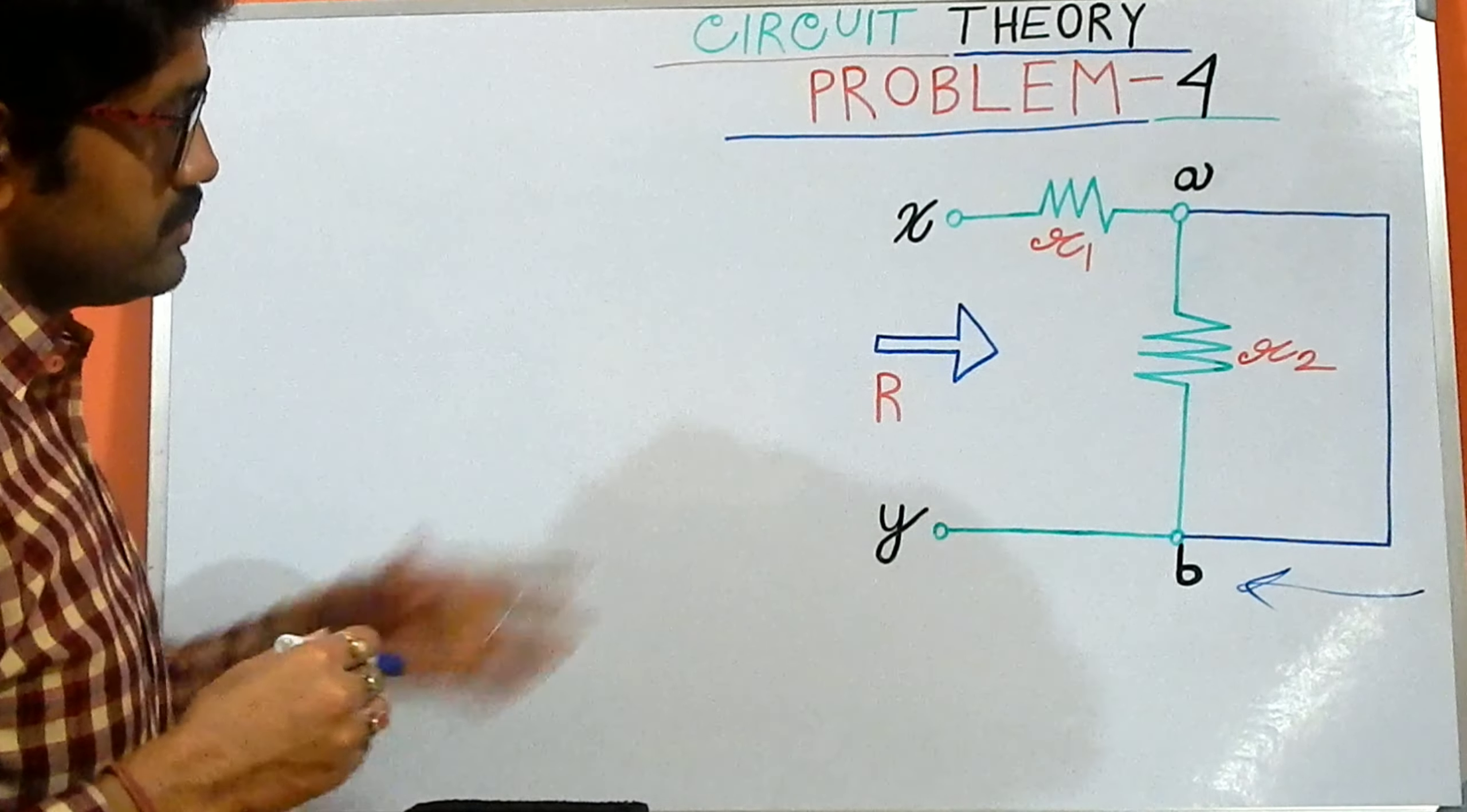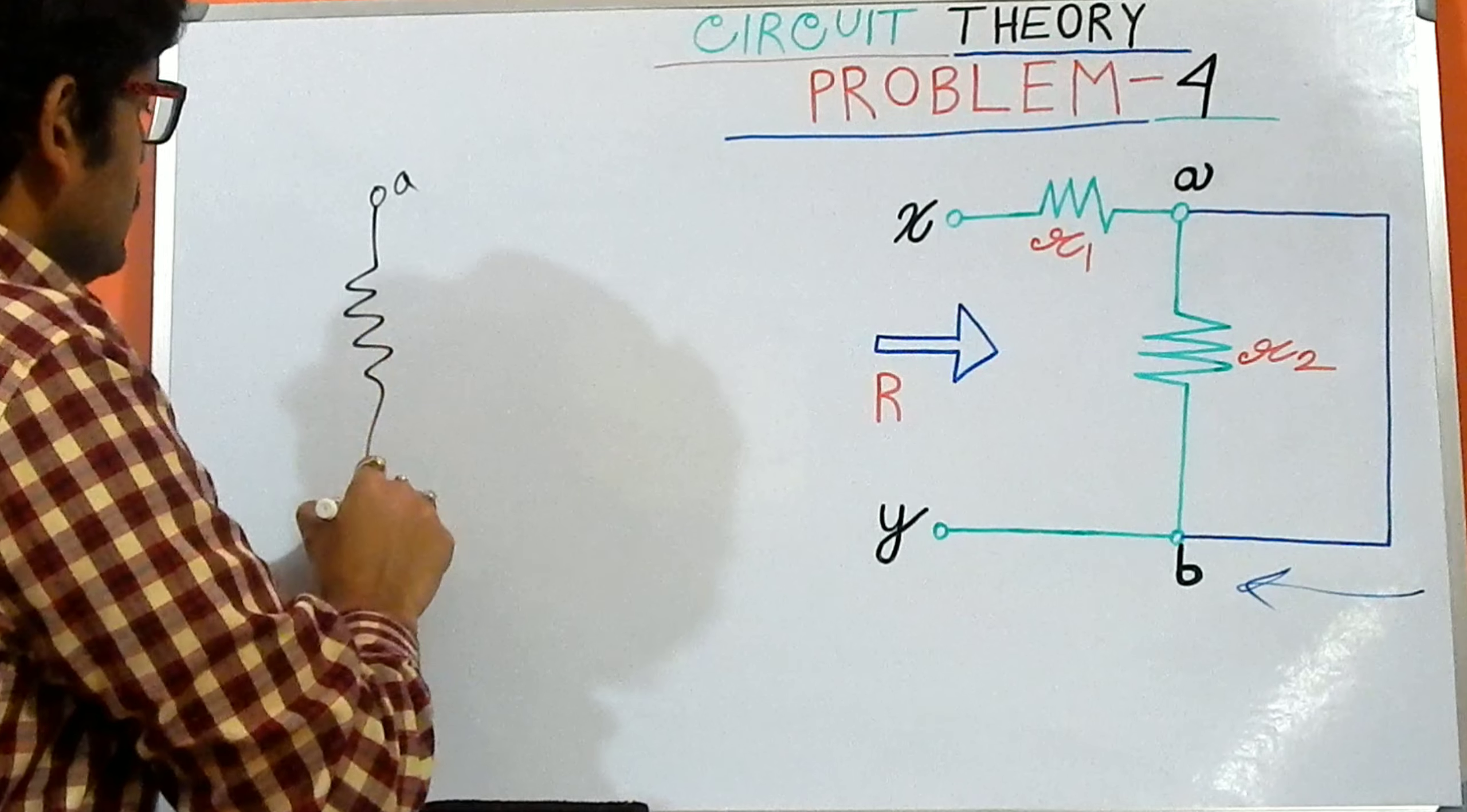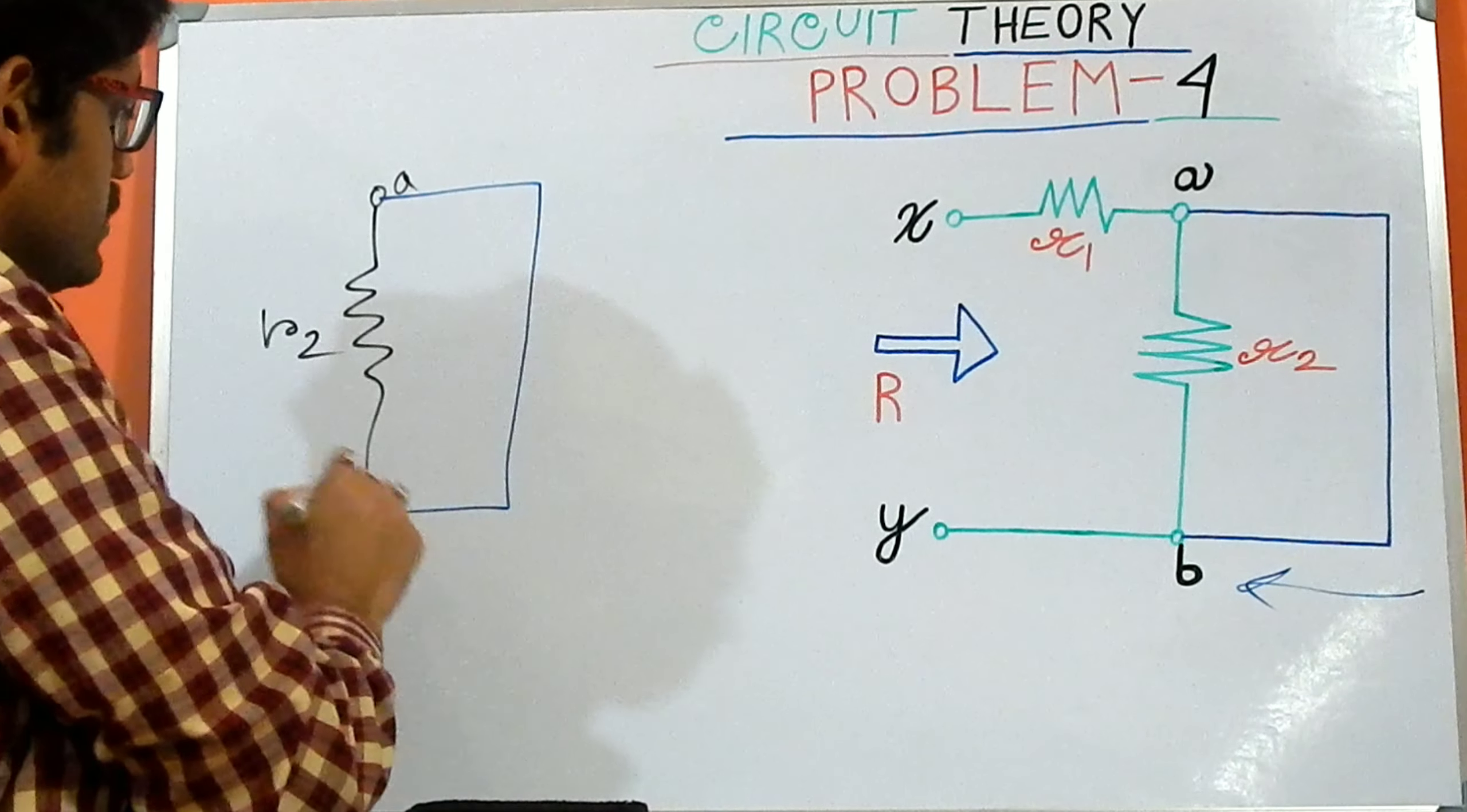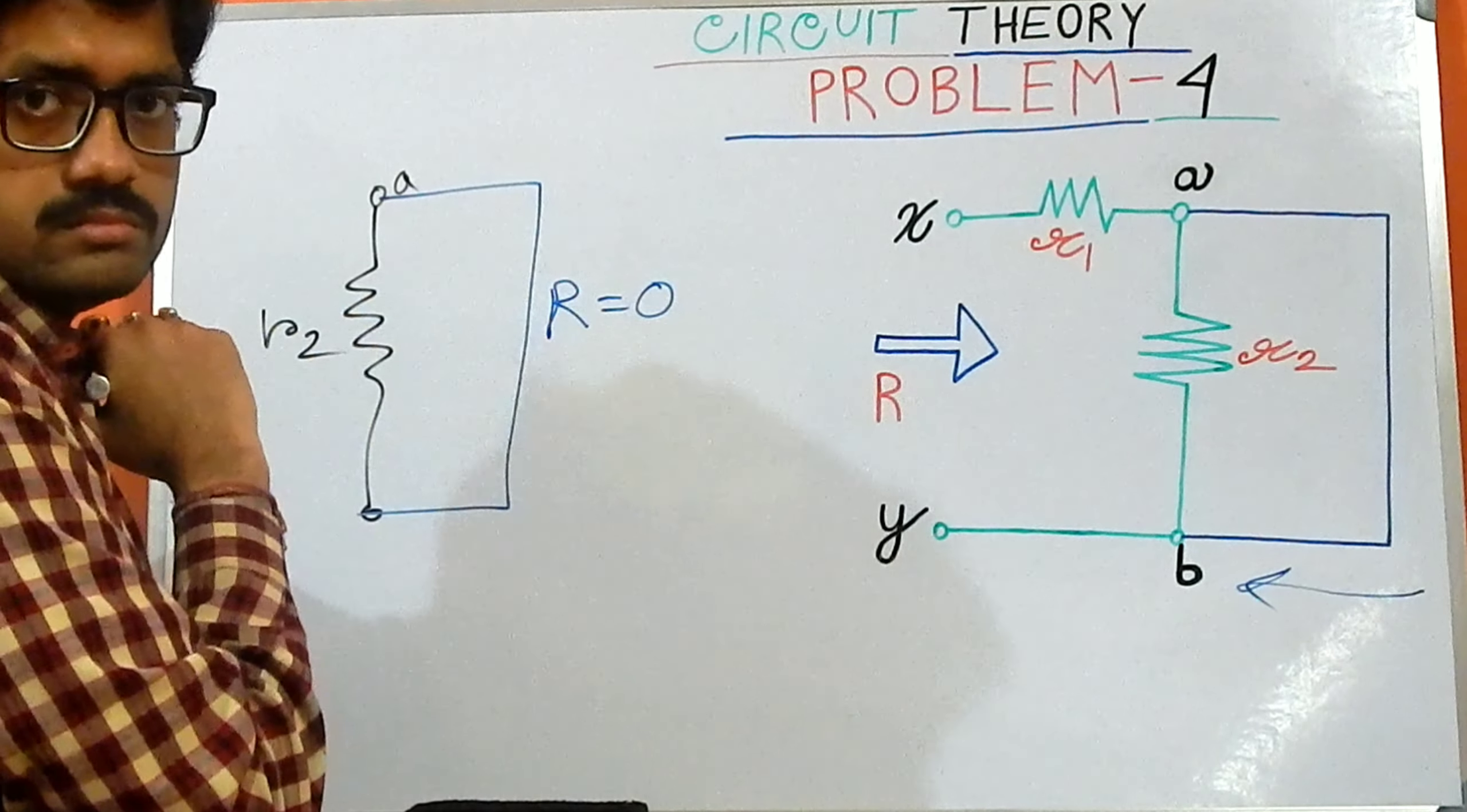Now I want to draw this portion first in a separate way. This one is our R2. The short circuit is applied over here. Short circuit means the resistance value will be 0.